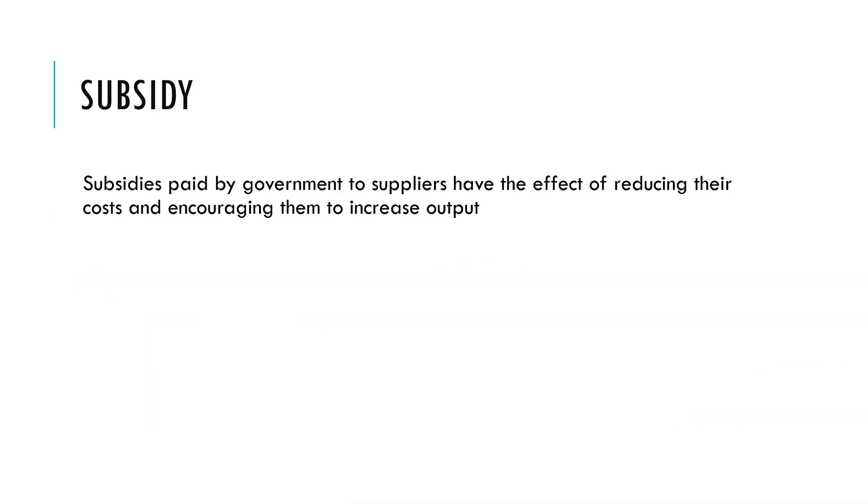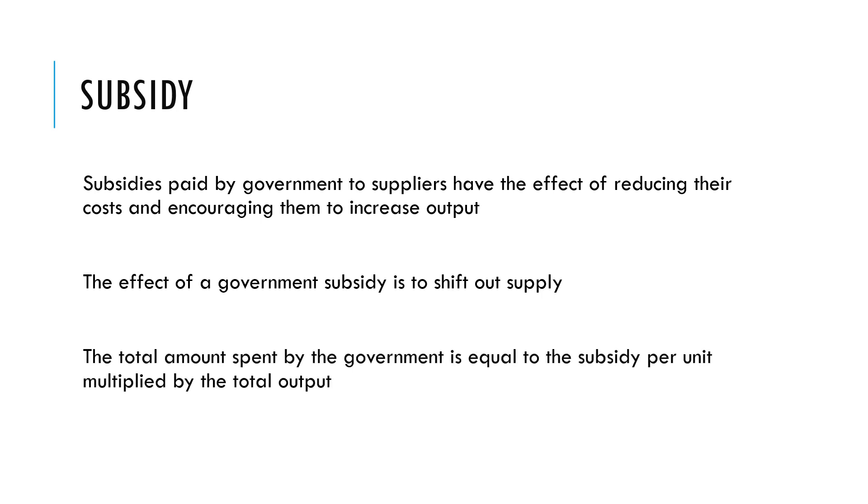So a subsidy is money paid by a government to a supplier and has the effect of reducing their costs and encouraging them to increase outputs. The effect of a government subsidy is to shift out supply, so the supply curve will shift to the right. The total amount spent by the government is equal to the subsidy per unit multiplied by the total output.